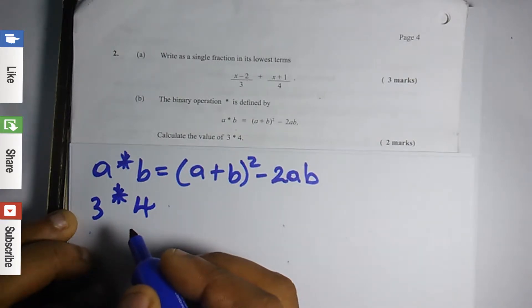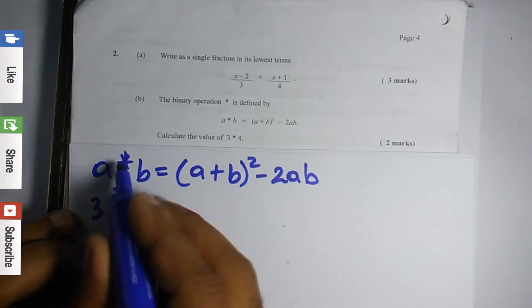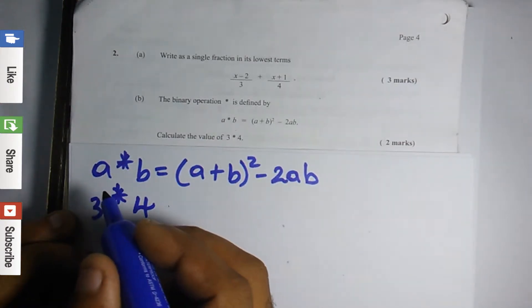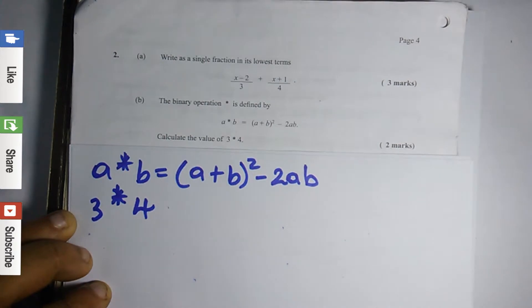This particular question is similar to substitution. They gave us an asterisk that represents the binary operation. They have other symbols which they could use.